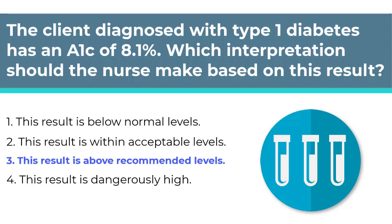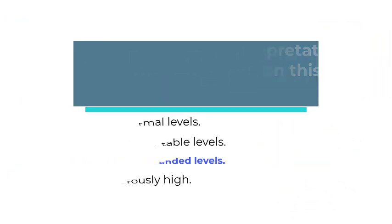The correct answer is number 3. This result parallels a serum blood glucose level of approximately 180 to 200 mg per deciliter, which is above the recommended levels for a diabetic. Normal levels are between 6% and 7%, which correspond to 120 to 140 mg per deciliter — an average blood glucose level. Clients with elevated blood glucose levels are at risk for developing long-term complications. Numbers 1, 2, and 4 can be eliminated because the level is not below normal, normal, or dangerously high.